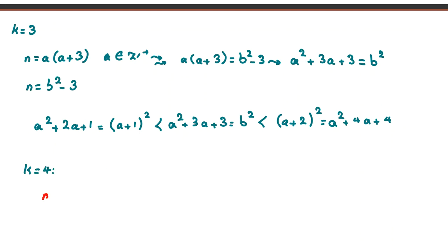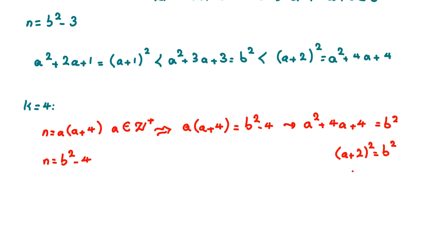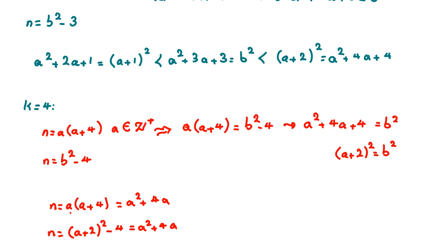For k=4: n = a(a+4) and n = b² - 4, where a is a positive integer. So a(a+4) = b² - 4, giving a² + 4a + 4 = b², which is exactly (a+2)² = b². So for all positive integers a, we can say n = a(a+4) = a² + 4a, and also n = (a+2)² - 4 = a² + 4a. So for each a we find a valid n. There are infinitely many such n's. k=4 is the first value that works.